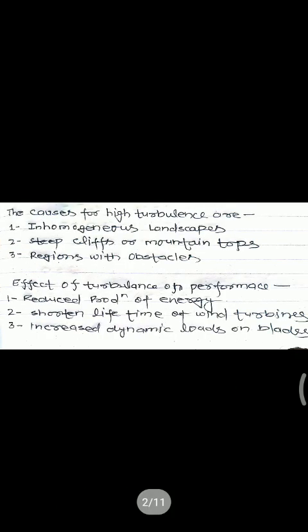Some other parameters are the causes for high turbulence. The main causes are: first, inhomogeneous landscapes — there should not be an uneven surface in the land, and a plain area would be beneficial for installing a wind turbine. Second, steep cliffs or mountain tops — there should not be very irregular mountains in the region where the turbine is to be installed. Third, regions with obstacles — there should be a minimum of obstacles to the wind so they cannot reduce the wind speed.